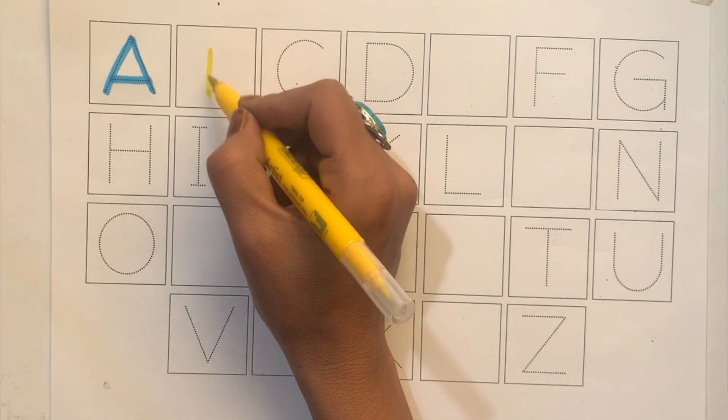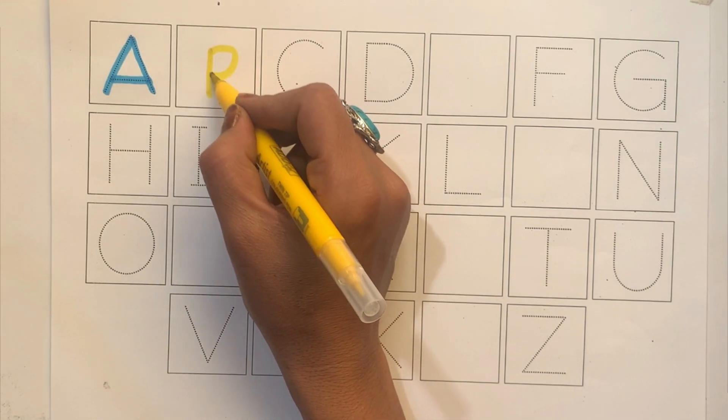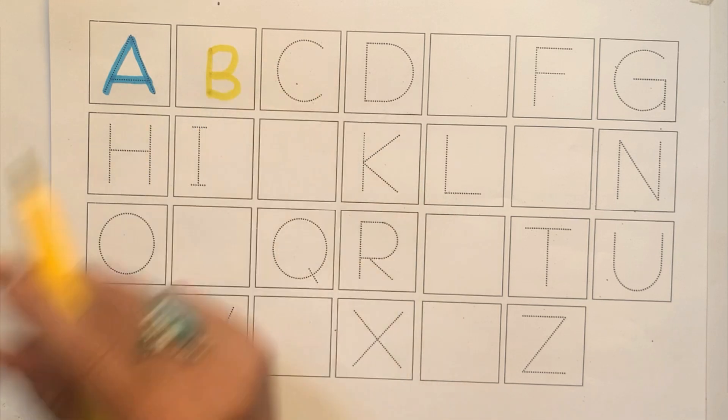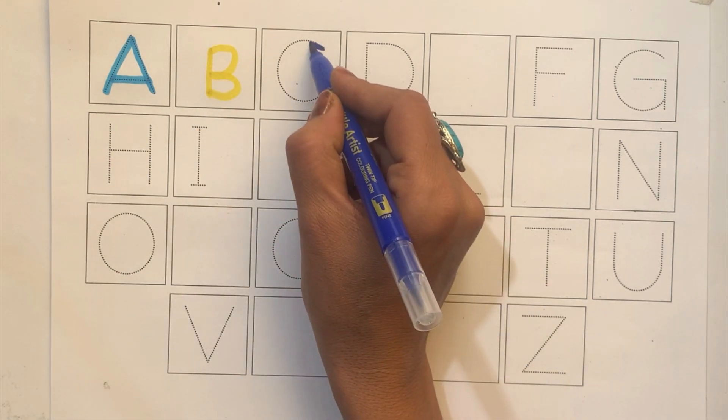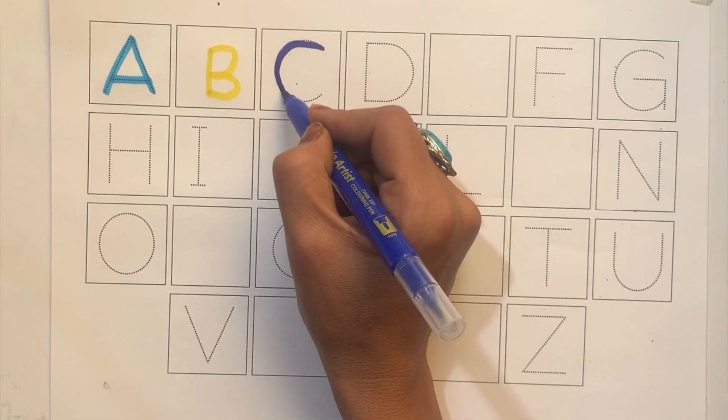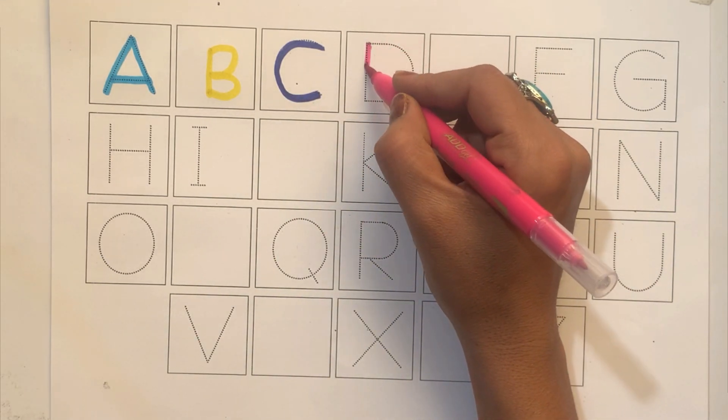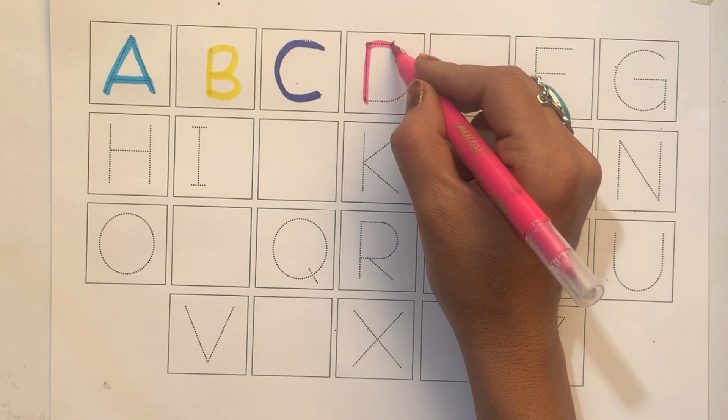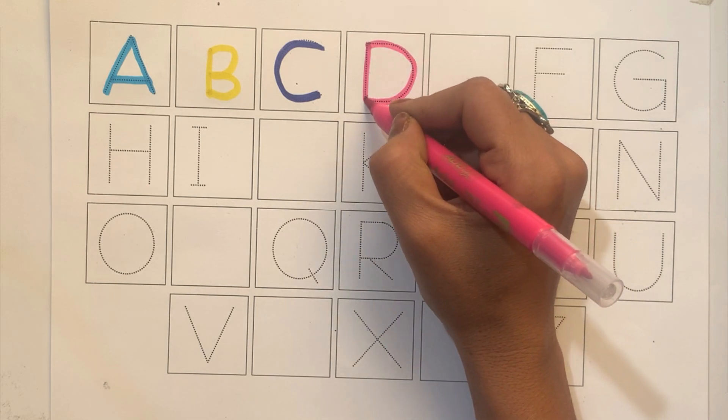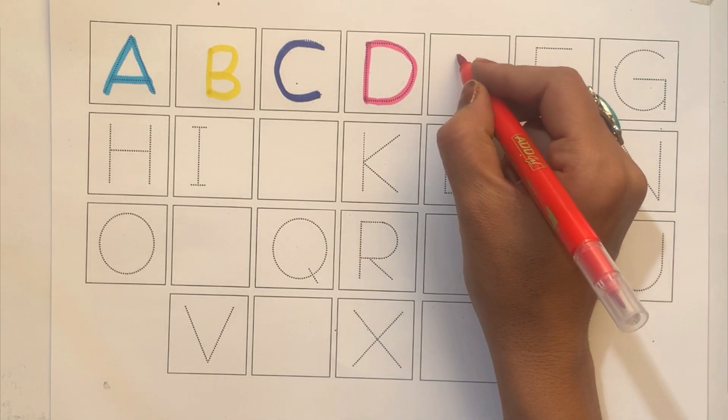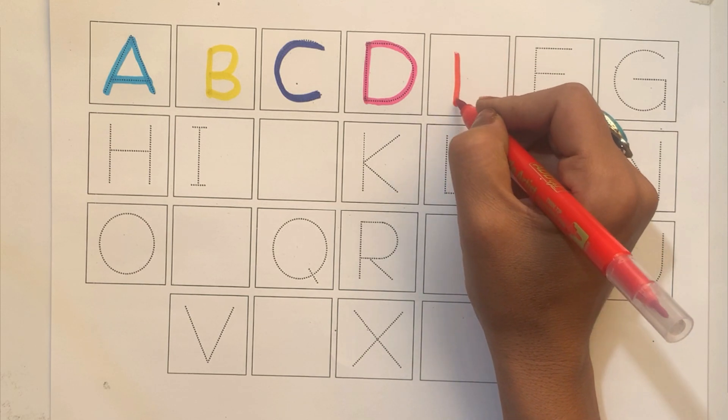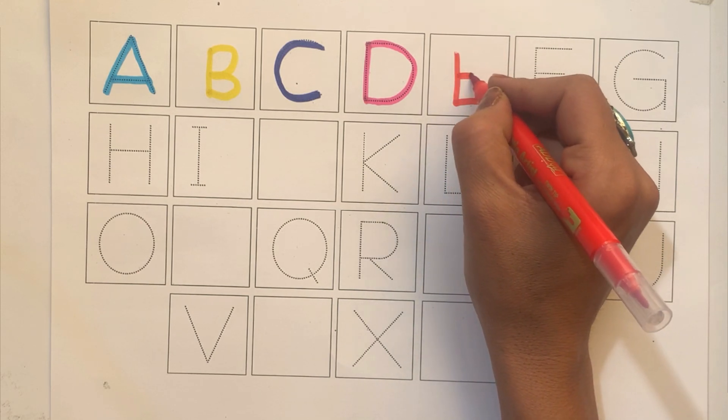B. B for ball. C. C for cat. D. D for doll. E. E for elephant.